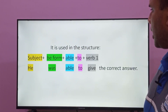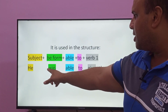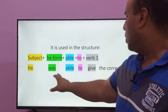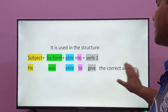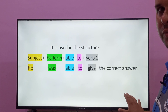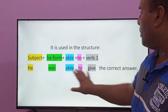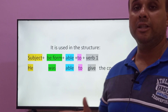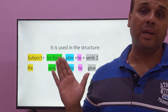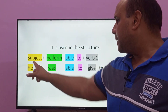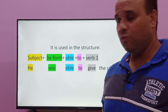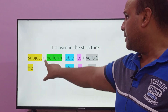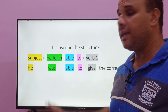Let's read this example sentence: 'He was able to get the correct answer.' Now I will write out the structure of this sentence. First, we have the subject. Then, what is associated with it? The verb — what form? We use the 'to be' verb: the past form is 'was,' the present forms are 'am,' 'is,' or 'are.'